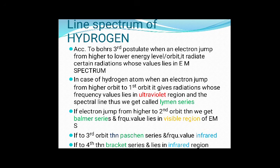Second, if the electron is jumping from a higher orbit to the second orbit, then you will get the Balmer series, and the frequency of these emitted radiations lies in the visible region of the electromagnetic spectrum.